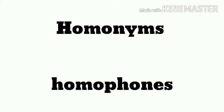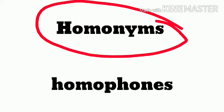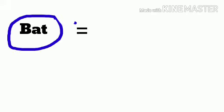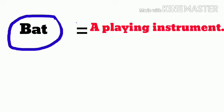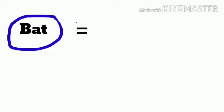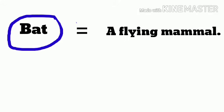Now, an important point: don't get confused between homonyms and homophones. Homonyms can be understood by an example — I'm going to discuss this in my next video. For example, 'bat' has two meanings: first, a playing instrument used in baseball, and second, a flying mammal. I'll discuss homonyms in the next video. For now, let's stay on homophones.